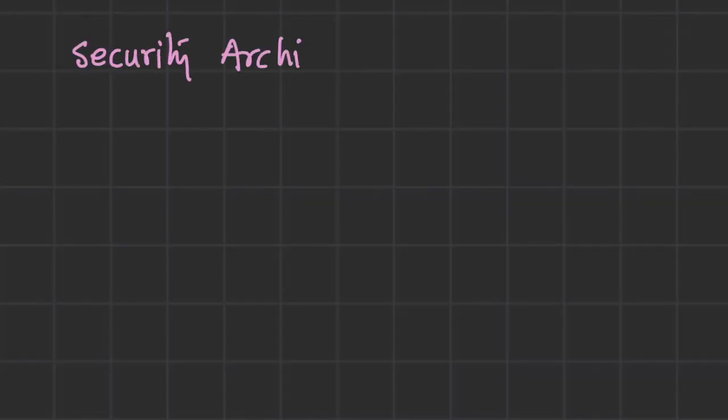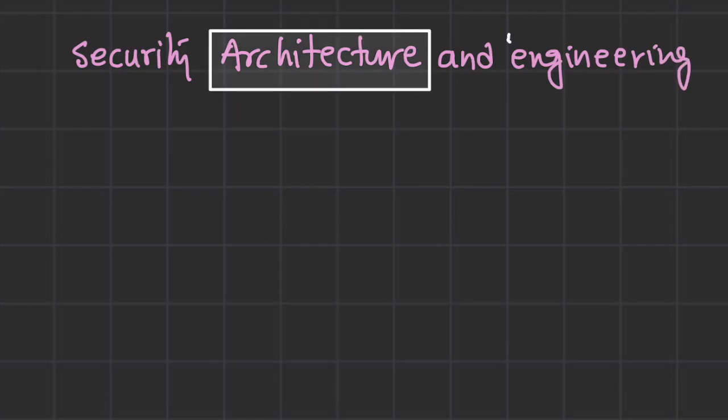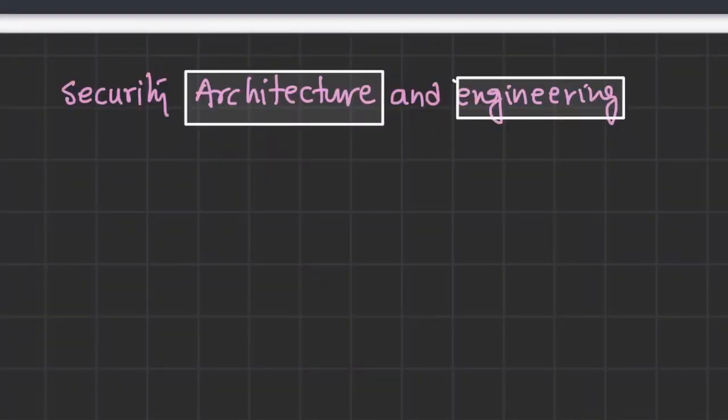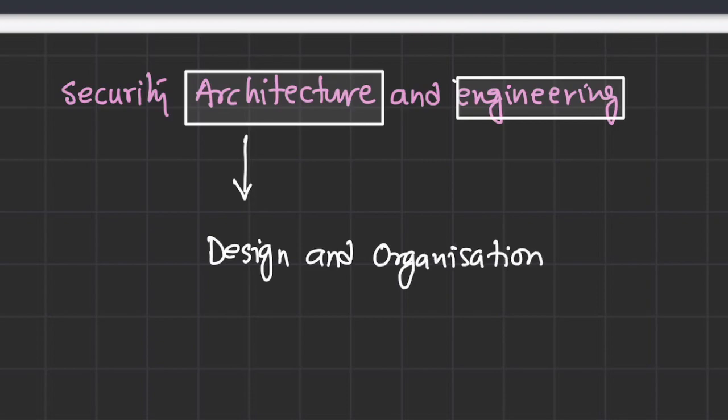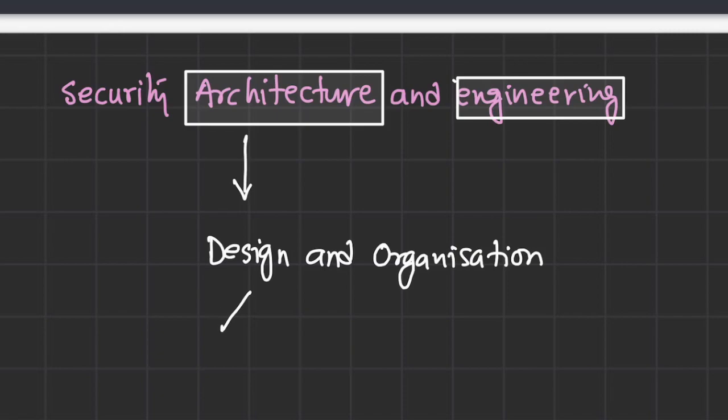We will be dealing with two key terms: architecture and engineering. We all have a rough idea of what these mean, but from the CISSP perspective, security architecture is basically the design and organization of components, processes, and services. We are designing and putting that design into some sort of structural organization — a high-level block diagram — which gives rise to the security architecture.